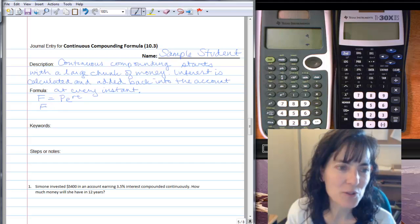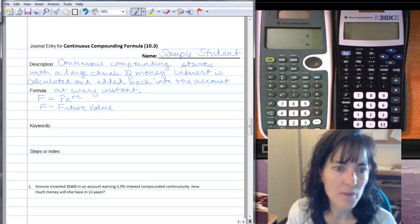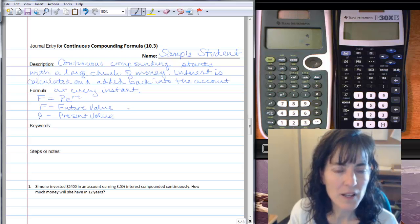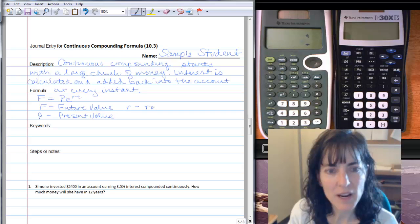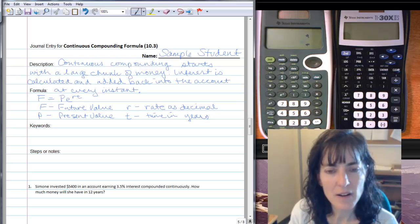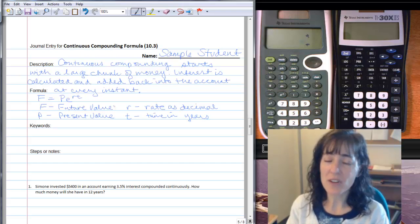And as you probably recall, the F is the future value. The P is the present value. The R is the rate as a decimal. And the T is time in years. And the E, remember, is on your calculator.